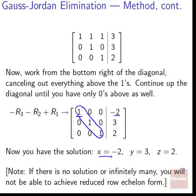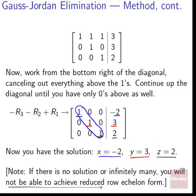We can now read off our answers: x equals negative 2, y equals 3, and z equals 2. Note that if the linear system has no solution or infinitely many solutions, you will not be able to achieve reduced row echelon form — this method won't work in those cases.